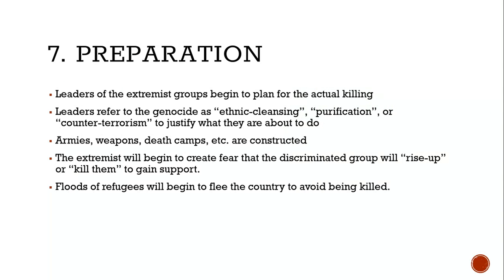Next is preparation. Leaders of extremist groups begin planning for the actual killing, referring to genocide as ethnic cleansing, purification, or counter-terrorism to justify what they're about to do. Cleansing has a positive connotation, yet we know what ethnic cleansing really means. Armies, weapons, and death camps are constructed. Extremists create fear that the discriminated group is going to rise up, gaining more support, and floods of refugees begin fleeing the country.